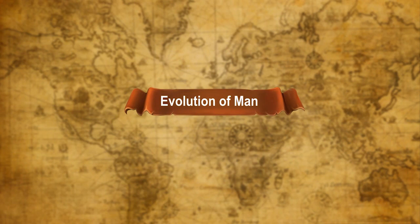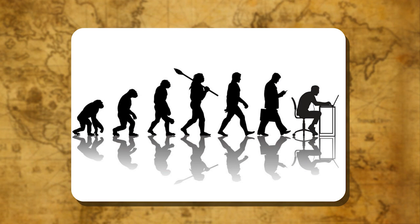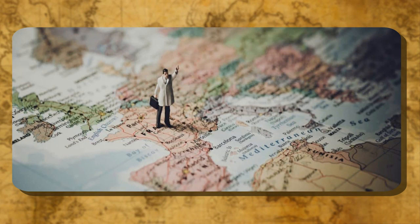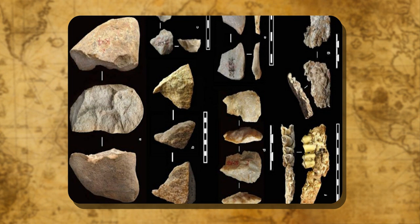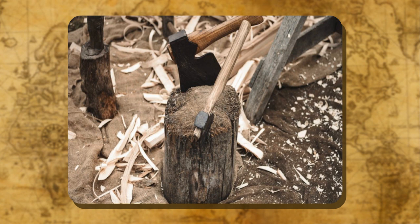Evolution of Man. Though Earth is billions of years old, human beings appeared on Earth only about 4 million years ago in Africa. Later, they spread slowly across the continents. Some remains of tools and other objects used by human beings have survived till date. Some of those tools like axes, spears and grinding stones are used even today.